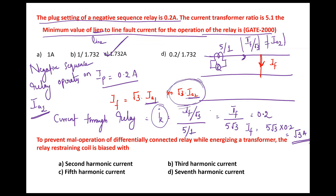To prevent the mal-operation of the differentially connected relay while energizing the transformer, the relay restraining coil is biased with the second harmonic of the current. We pass the second harmonic current through the restraining coil to provide additional restraining force, which prevents the operation of the differential relay during charging of the transformer. This component is very large in magnetic inrush currents — from 30 to 70 percent.